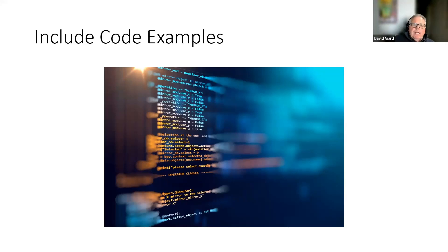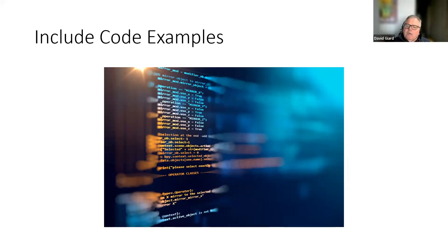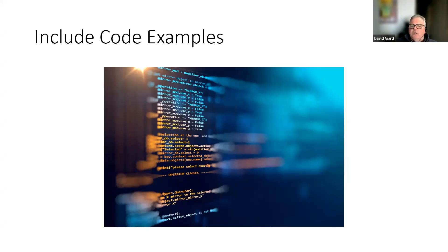As a reviewer, it really helps to include code samples — even pseudo code. Don't assume the developer knows everything you know. A little code can help, whether you write it or point to it online. Code samples work well for things that would make the code more efficient or significantly reduce lines of code. But don't overdo it — if you start writing code for them, the author may feel you don't trust them, and it can poison the relationship.